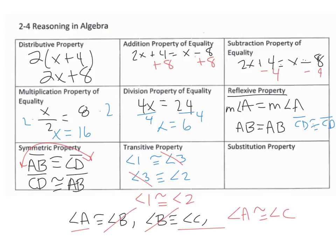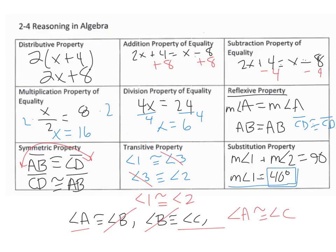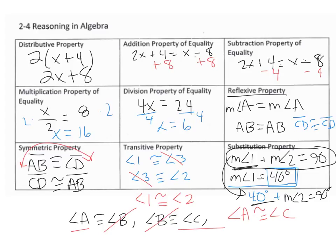The substitution property: if you know the measure of angle 1 plus the measure of angle 2 equals 90, and you know that the measure of angle 1 equals 40, you can substitute and write 40 instead of the measure of angle 1. So 40 degrees plus the measure of angle 2 equals 90. Instead of writing measure of angle 1, I wrote 40 degrees — that's substitution.